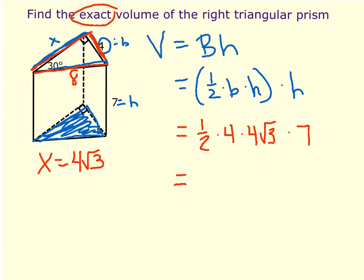Now, when I multiply this together, I'm going to do 1 half times 4 times 4 times 7, and then just attach the root 3. And so we get an answer of 56 root 3. And that is, again, going to be cubic units because we are doing volume.